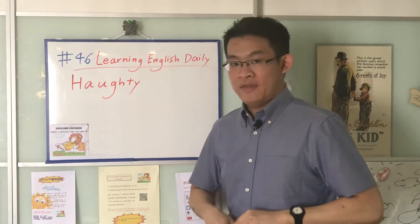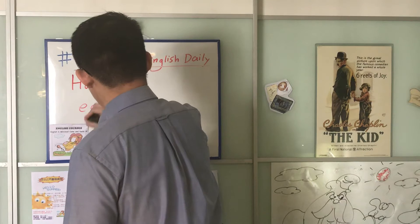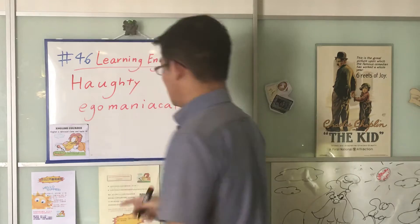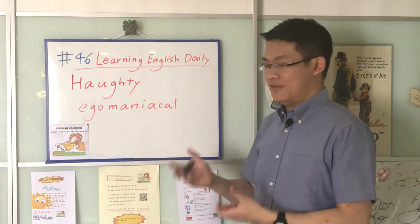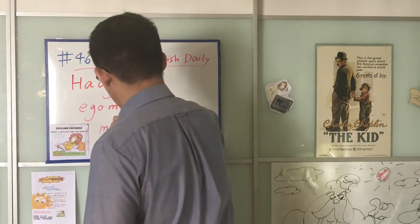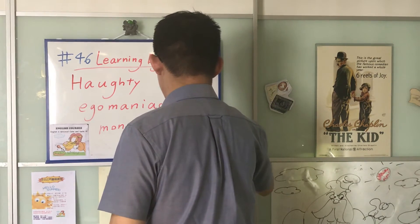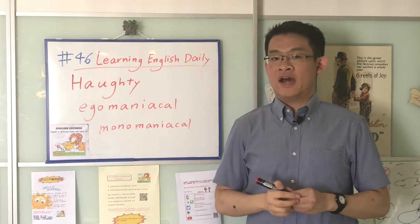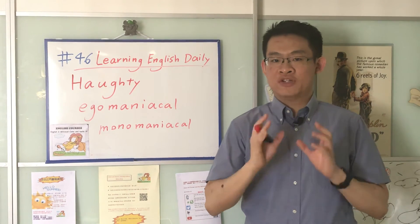A word that is similar to this word would be the word egomaniacal. Another word that ends with 'maniacal' would be the word monomaniacal. Monomaniacal means a morbid obsession over one particular thing.